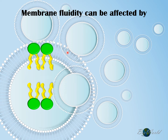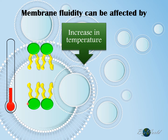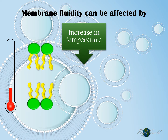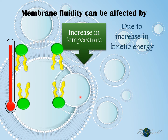Now that we know that the membrane is fluid, let's move on to factors that can affect membrane fluidity. Firstly, temperature. At normal temperature, the intrinsic kinetic energy within the phospholipid molecules makes the molecules constantly move. However, they do not move too far apart, and in this way the membrane's fluidity is maintained. But when the temperature is increased, the kinetic energy within the molecules also increases, causing the molecules to move apart more frequently. When this occurs, the membrane fluidity increases.